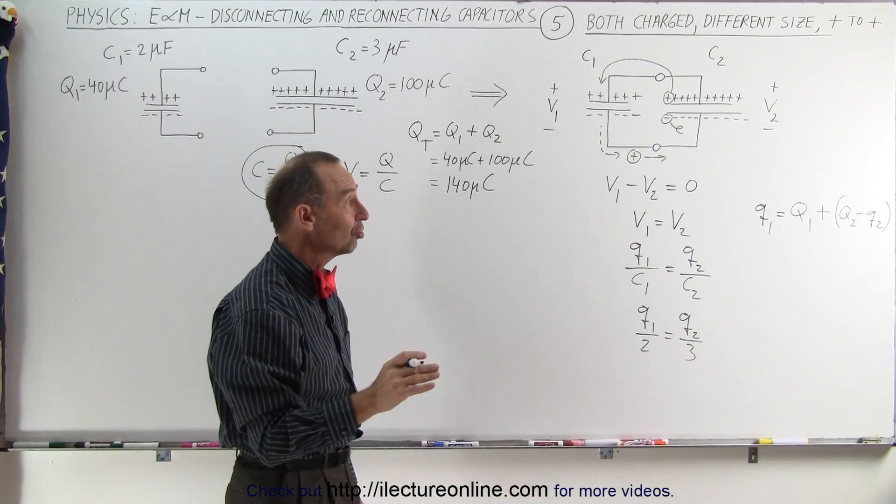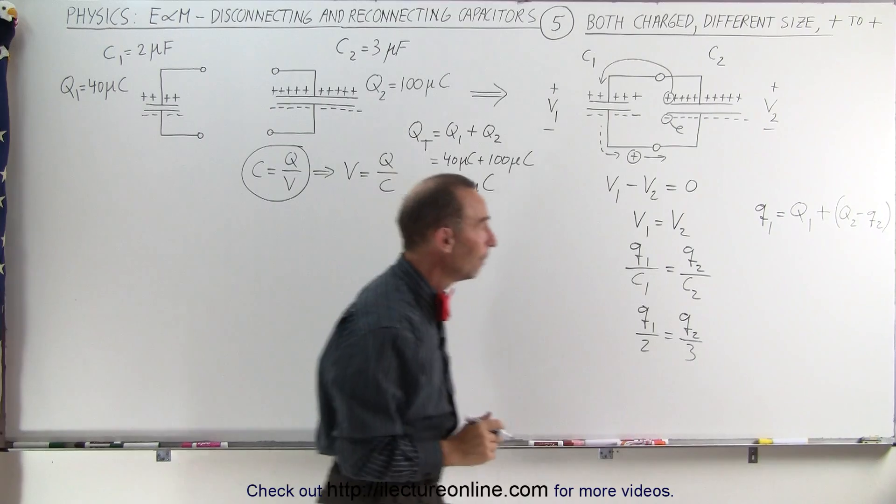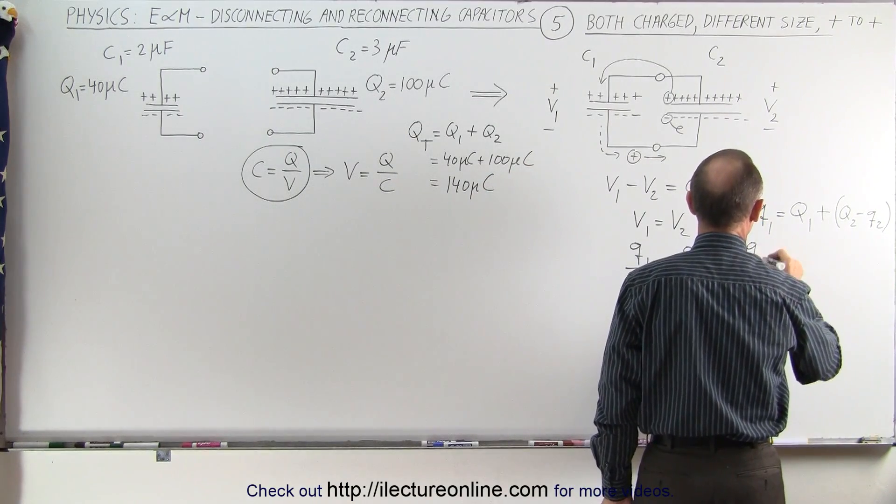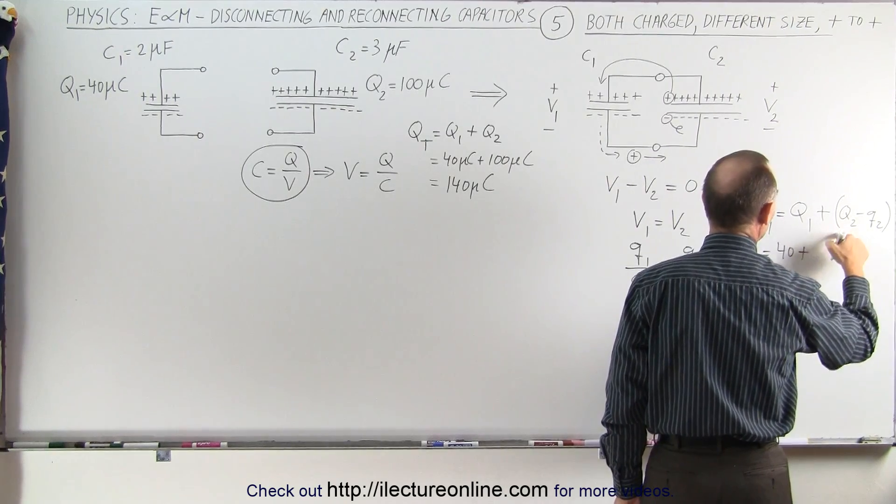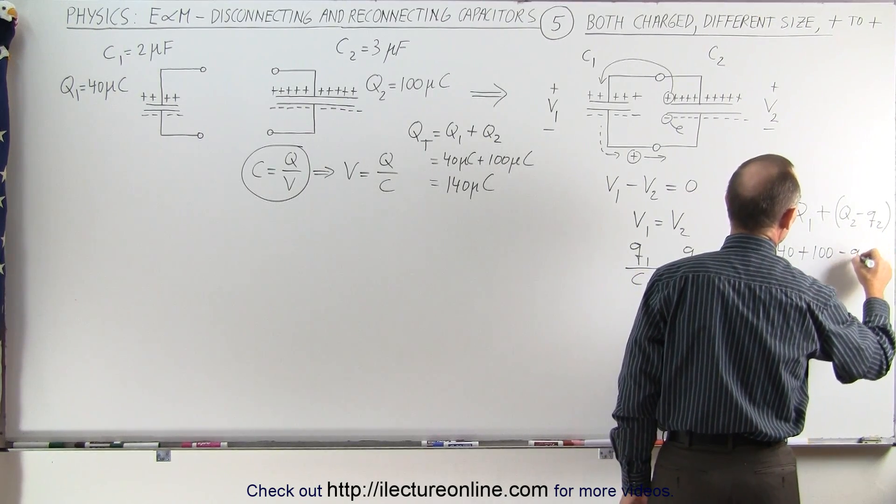Now we also have a relationship between q1 and q2. So here we can say that q1 is equal to big Q1, which is 40, plus big Q2, which is 100, minus little q2.